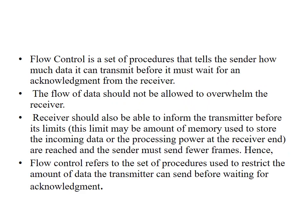Flow control is identified through a set of procedures that tells the sender how much data it can transmit before it must wait for an acknowledgement from the receiver. The sender should identify the receiver's processing speed. For example, if the receiver is able to process 100 packets per second, the sender should also send only 100 packets per second. If the sender sends 101 packets per second and the receiver has capacity for only 100, one packet will be lost.